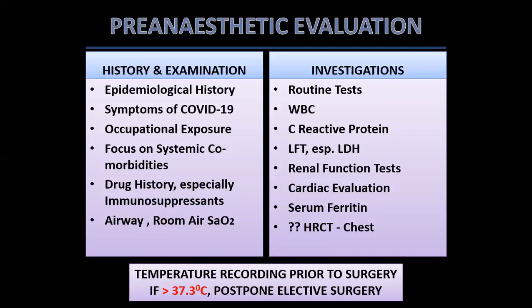For investigations, WBC count is important because patients can be either leukopenic or lymphopenic. C-reactive protein may be elevated, and LDH begins to rise in very sick patients. Serum ferritin levels rise in sicker patients, and ferritin is known to activate macrophages, which worsens the existing cytokine storm — patients with hyperferritinemic syndromes have a much poorer prognosis. HRCT chest is important, and it is always advisable to monitor temperature the morning of surgery; if it exceeds 37.3 degrees centigrade, it is best to postpone elective surgery.